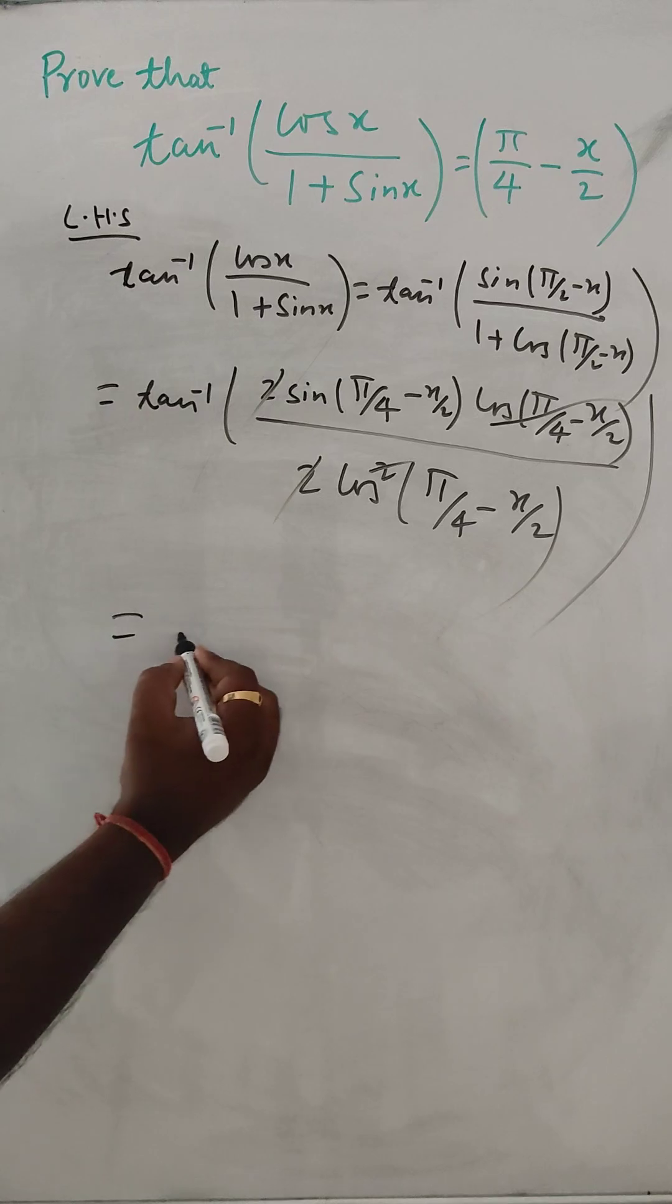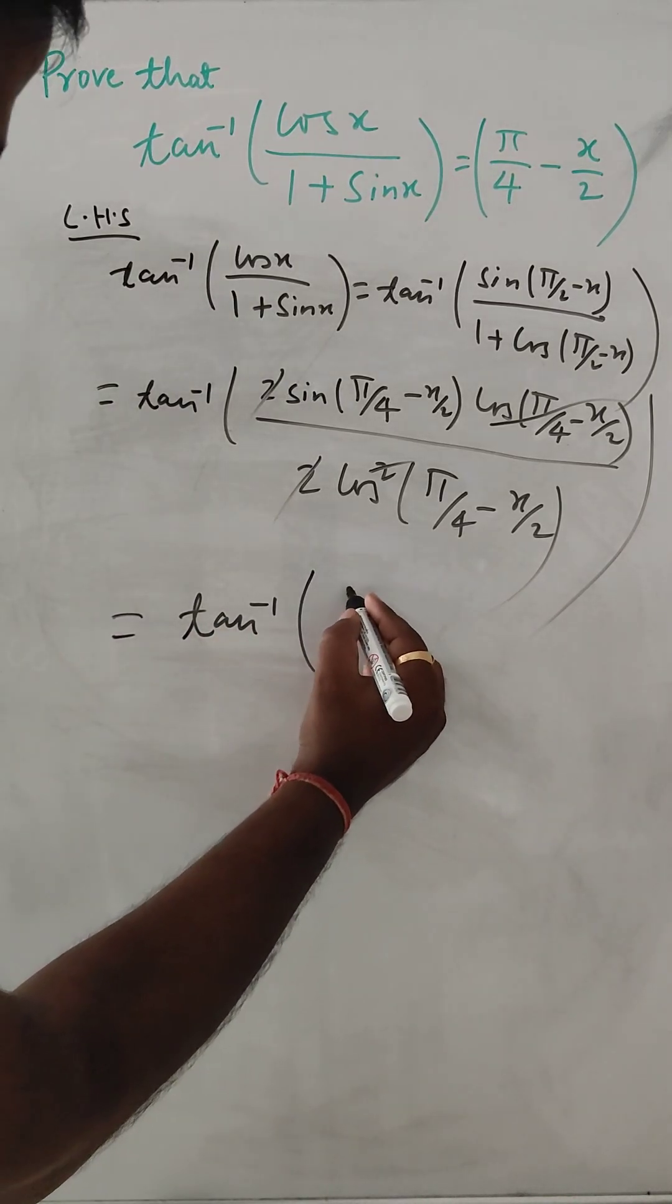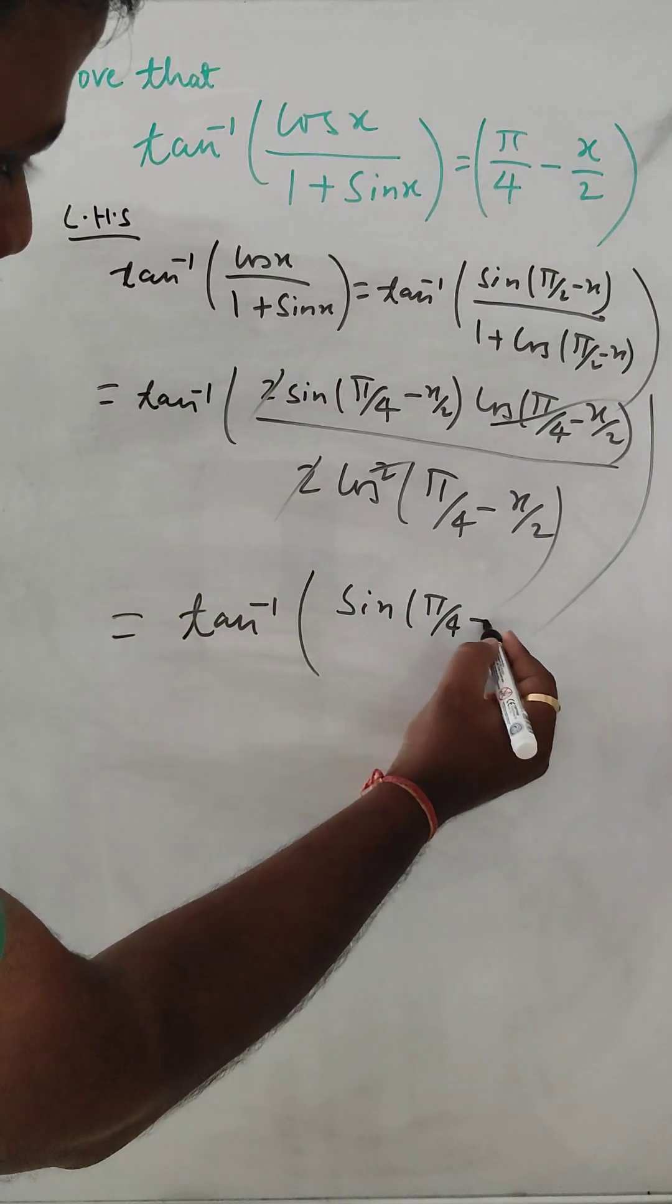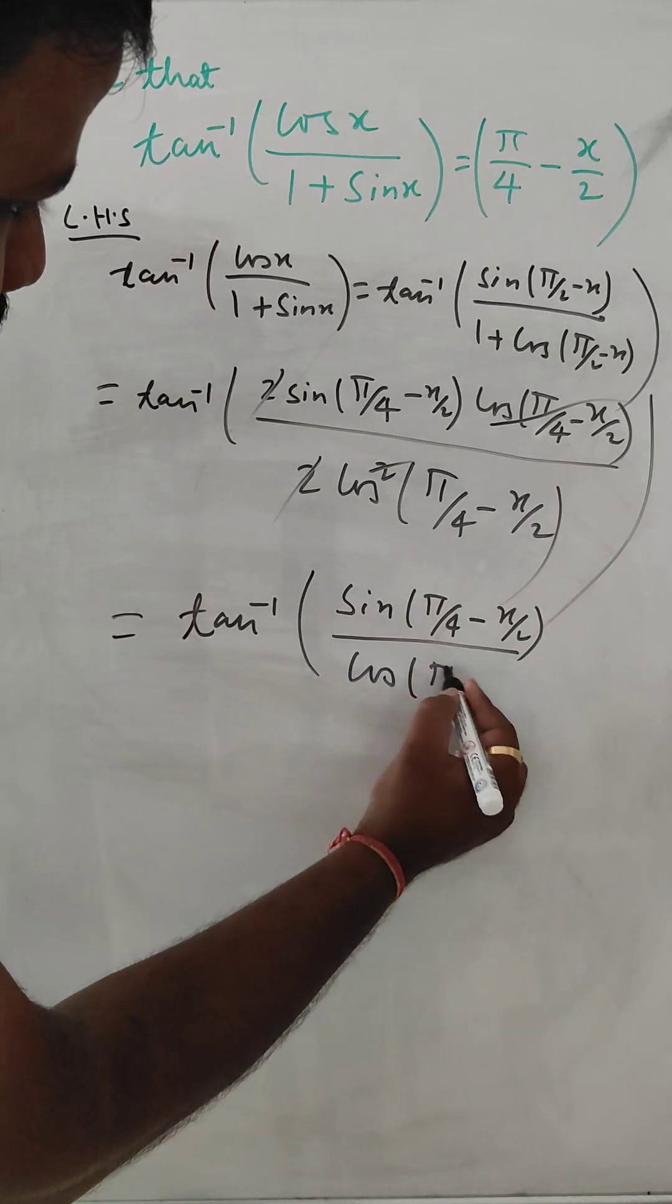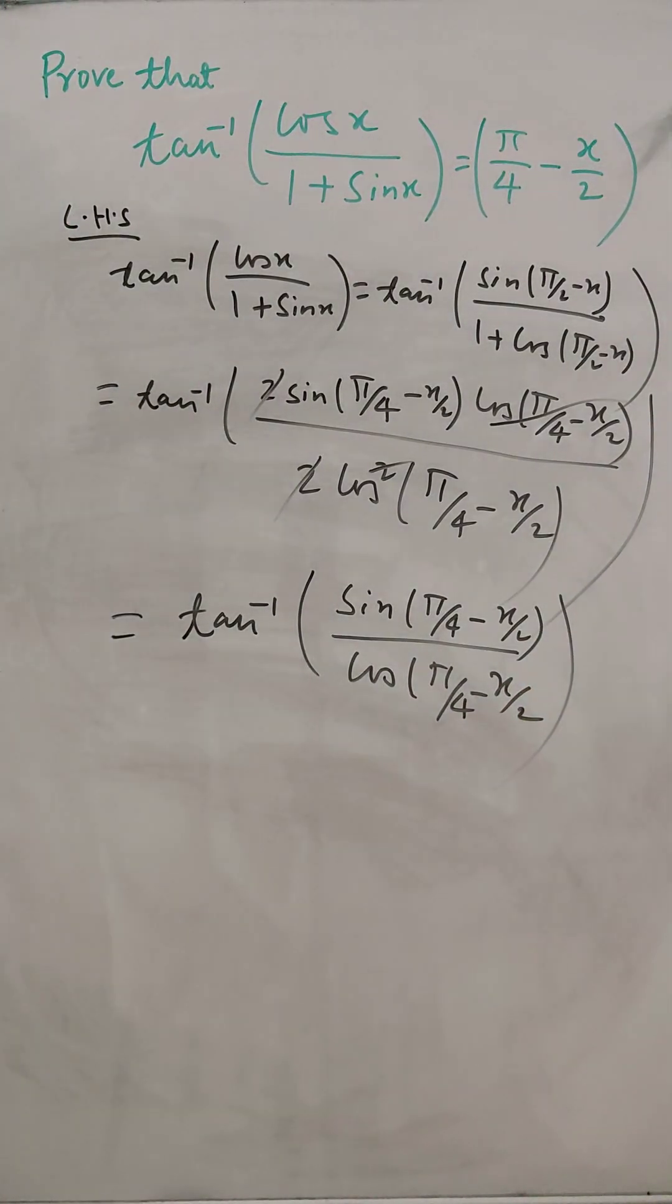Now, what is left tan inverse sin pi by 4 minus x by 2 and cos pi by 4 minus x by 2.